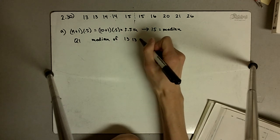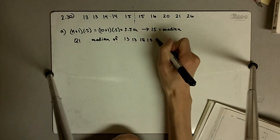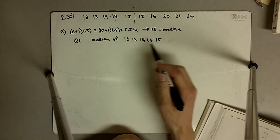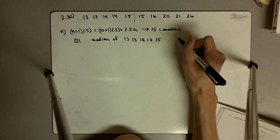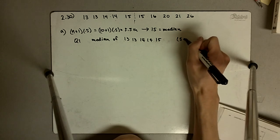So 13, 13, 14, 14, 15. Now here we have 5 numbers, so to find the median there we do 5 plus 1, again n plus 1 times 0.5.